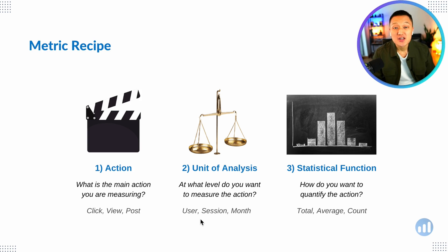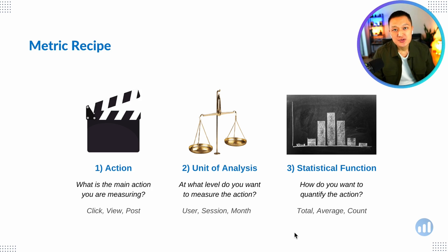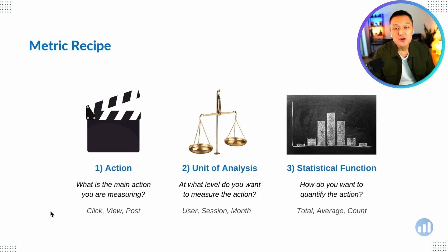You also have to think about the unit of analysis: are we talking about clicks per user, clicks per session, or clicks per month? And how are we applying the statistical function — are we talking about the count of clicks, or the average number of clicks per user? Always make sure that whenever you define a metric for product sense or A-B experiment questions, your metric embeds these three elements.